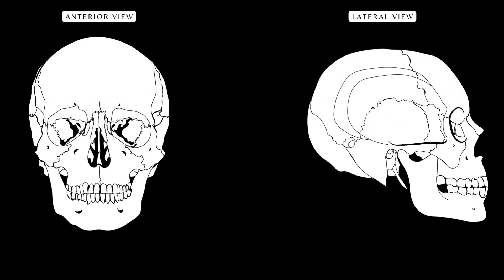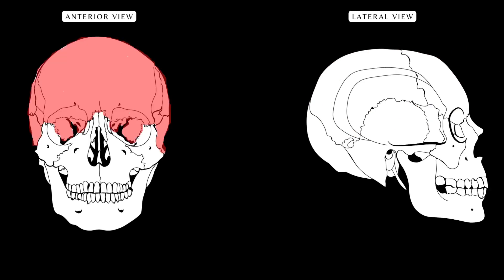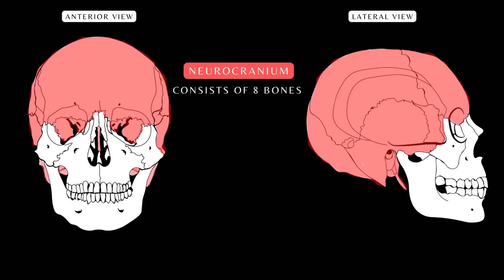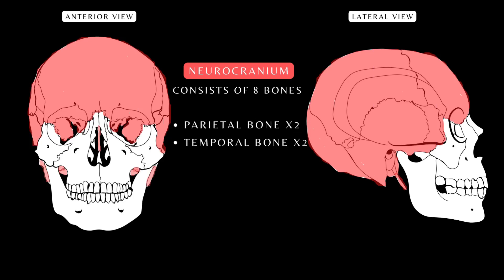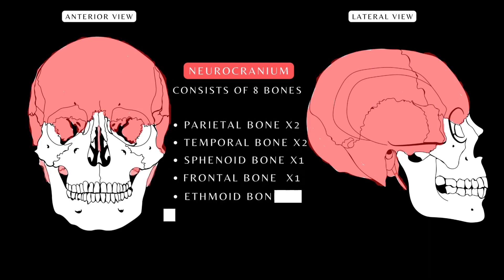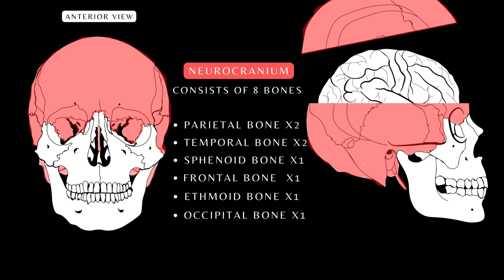The group of bones that encloses the brain is called the neurocranium and comprises 8 bones: 2 paired bones — the parietal bone and the temporal bone — and 4 unpaired bones: the sphenoid bone, frontal bone, ethmoid bone, and the occipital bone. All bones fuse together to form the neurocranium and act as a protective vault for the brain. Let's make a transverse section through the skull to expose the brain and see its exact resting position. Here is the calvaria removed, and here is the brain in situ.